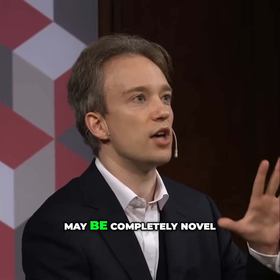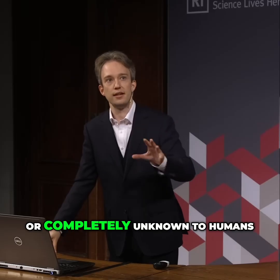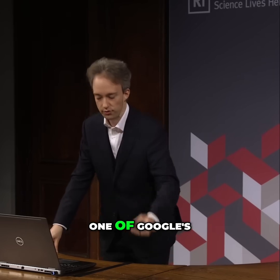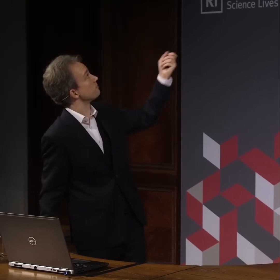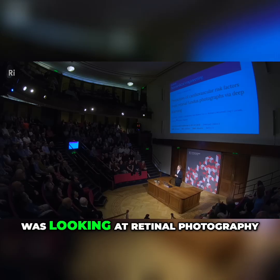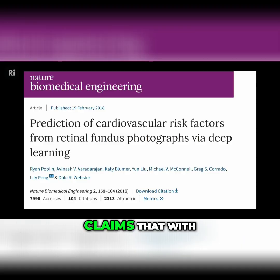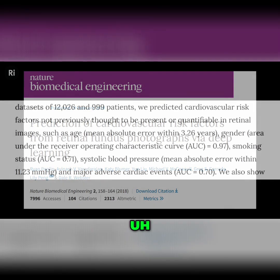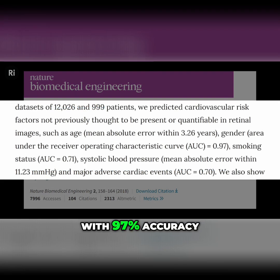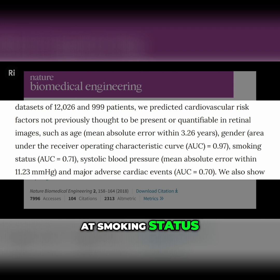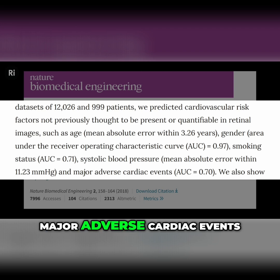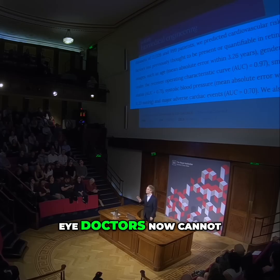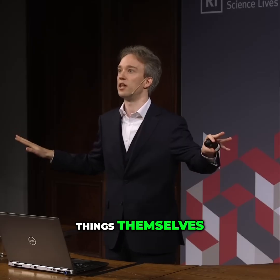Those distinguishing features may be completely novel or completely unknown to humans. One of Google's recent AI projects was looking at retinal photography. This recent paper claims that with uncanny accuracy, it was able to look at retinal photos and work out sex with 97% accuracy, age within four years, and better than chance at smoking status, blood pressure, and major adverse cardiac events. Eye doctors cannot detect any of those things themselves.